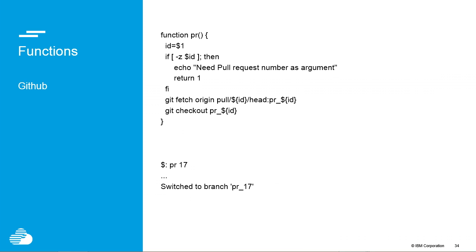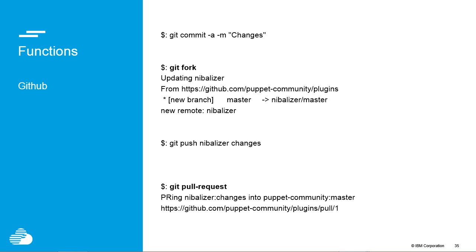GitHub integration — this is something I stole. What it does is: you're in some Git repo and you type 'PR17', and it'll check out the 17th PR so you can run the tests or git grep or whatever you're trying to do. There's more GitHub integration on the next step — I don't want to go press the fork button or the pull request button. Bash utilities have existed for a while that allow you to do this on the command line. I highly recommend you add that to your workflow, because otherwise you're just wasting time.